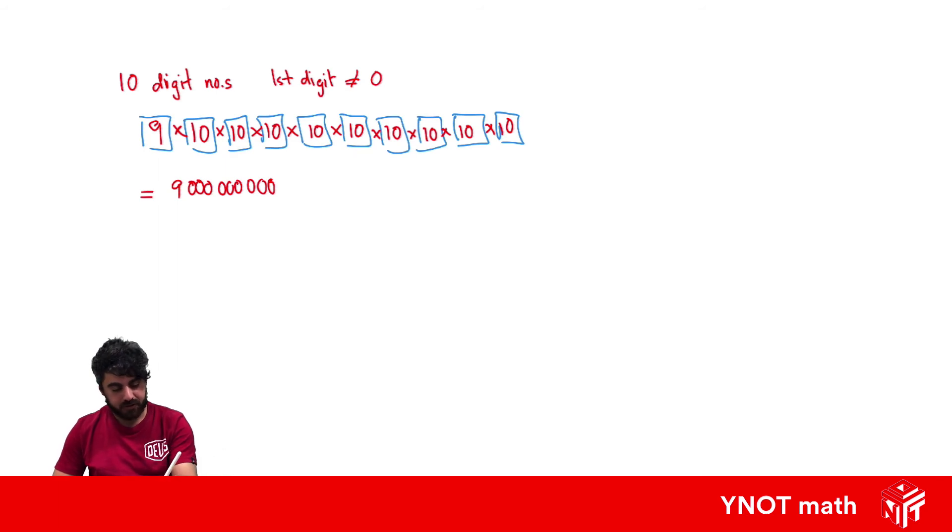But what if we just restricted our choices? Again we're still doing 10 digit numbers, the first digit can't be zero, but this time we don't want to repeat any numbers. So again let's draw out our 10 boxes to represent our 10 digits.